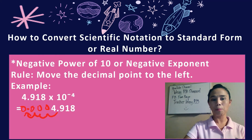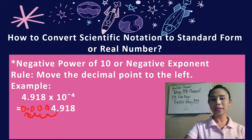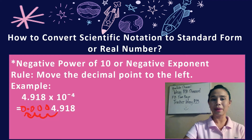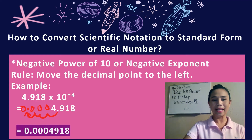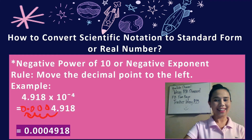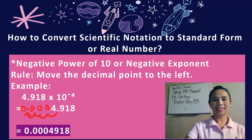We put the decimal point after counting 4 places, and then we can also put a zero before the decimal point — that's the standard way of writing it. So our final answer would be 0.0004918. I believe so — 0.0004918.